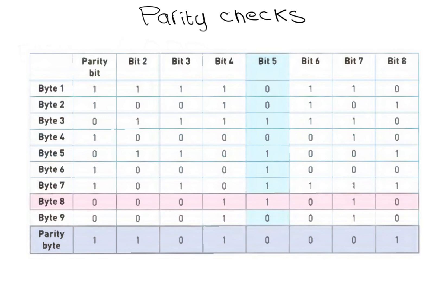First of all, the table shows that an error has occurred following data transmission — there has been a change in parity in one of the bytes. Secondly, at the intersection of row 8 and column 5, the position of the incorrect bit value which caused the error can be found. The 1 bit at this intersection should be a 0 bit.